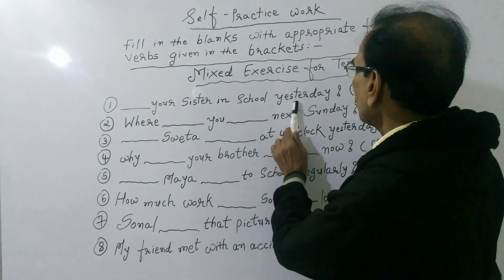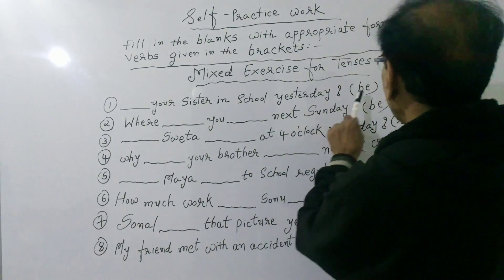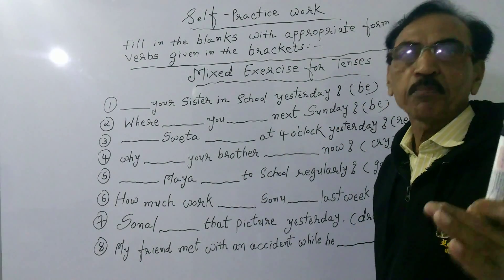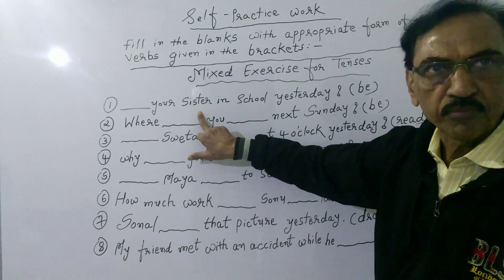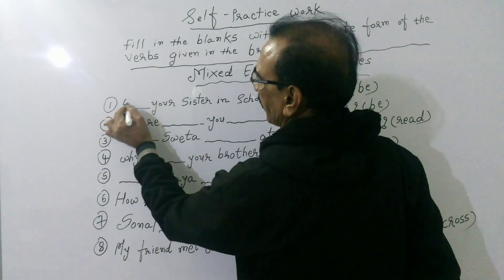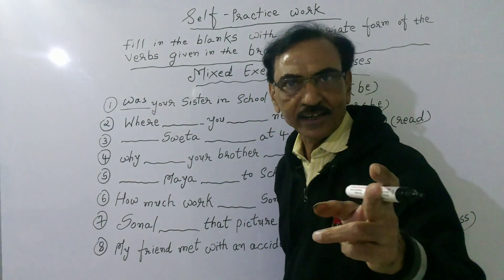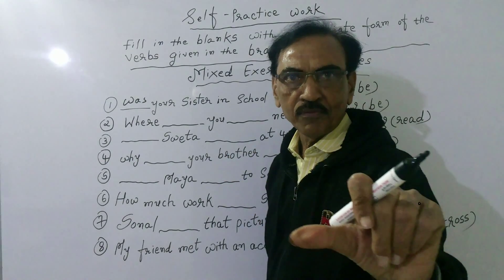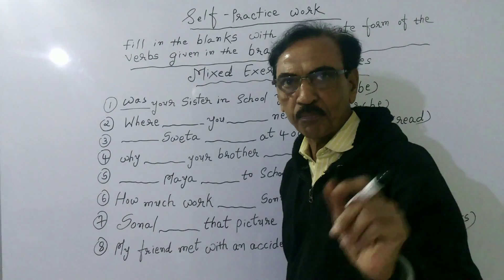First sentence: dash your sister in school yesterday. 'Yesterday' indicates simple past tense. Here only one blank mark is there and 'be' is given. The past tense form of 'be' is 'was' or 'were'. 'Your sister' is in singular form, so the correct answer is: Was your sister in school yesterday? If your answer matches, you deserve some praise.